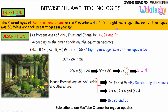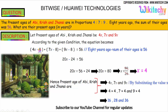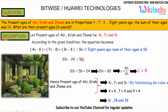According to the given condition, 8 years ago the sum of their ages was 56. So: (4x − 8) + (7x − 8) + (9x − 8) = 56. We get 20x − 24 = 56, so 20x = 80, and x = 80 ÷ 20. We got the value of x as 4.